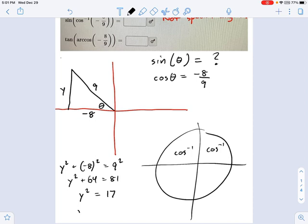So that means y is the square root of 17 plus or minus. Which one makes sense? Hopefully you're saying plus, because y is going up. So y equals square root of 17.